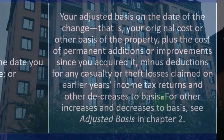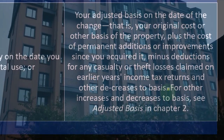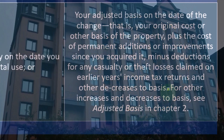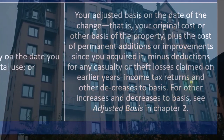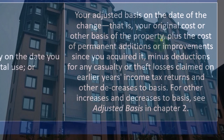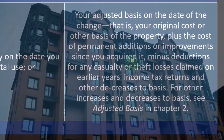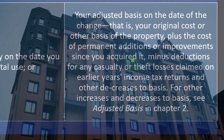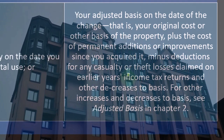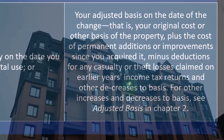With rental property, obviously we depreciate the property, so we track it pretty closely. With a personal home, you've got to make sure you get the whole basis in there. So the basis would be the cost or basis of the property — what you bought the property for — plus the cost of permanent additions or improvements, big things like a new roof, minus deductions for any casualty or theft losses claimed on earlier years' income tax returns.